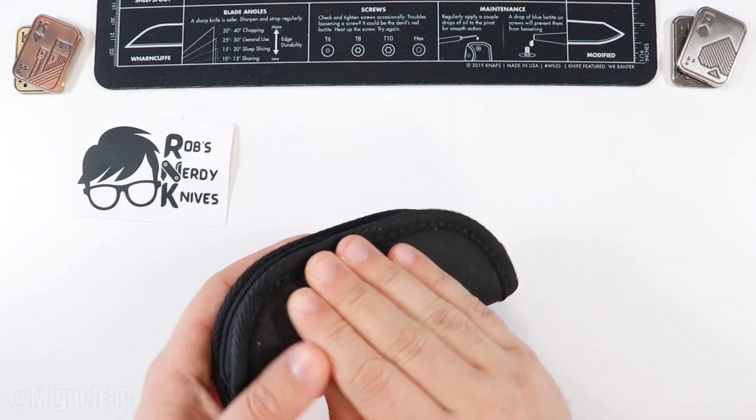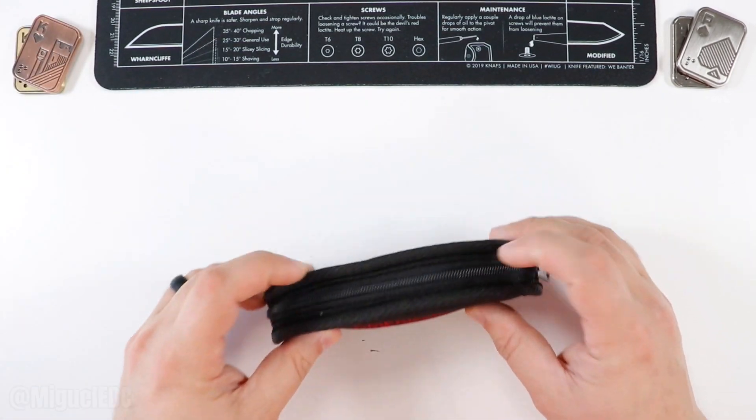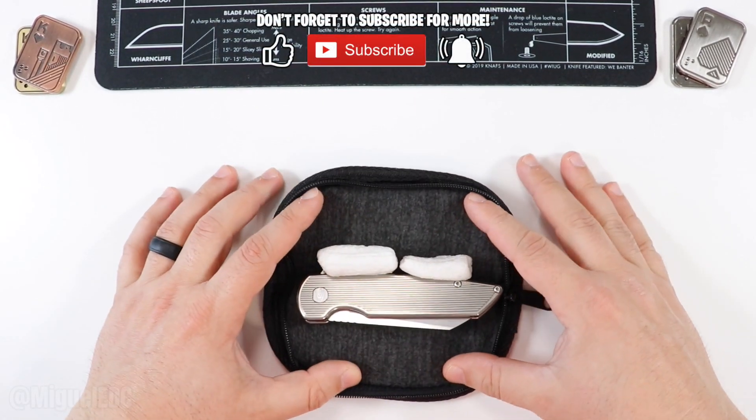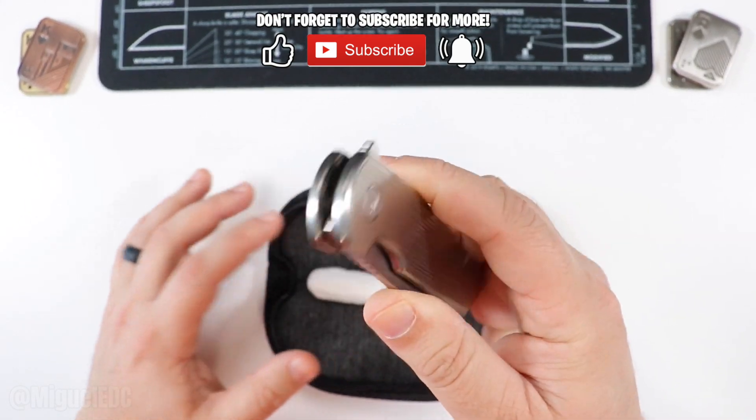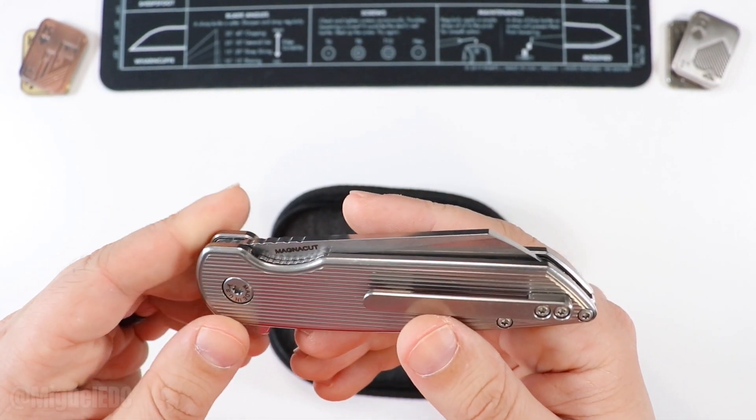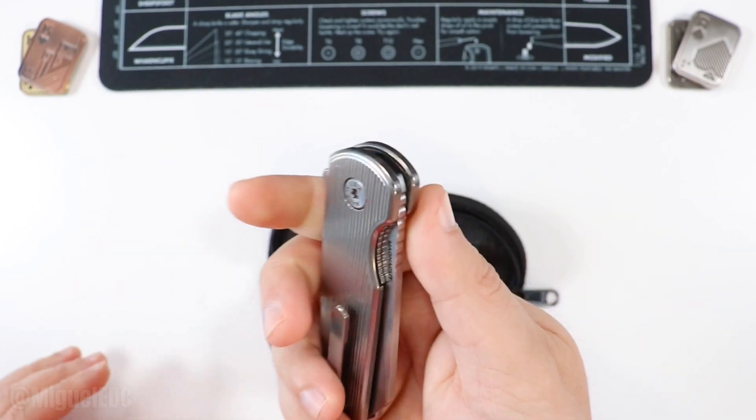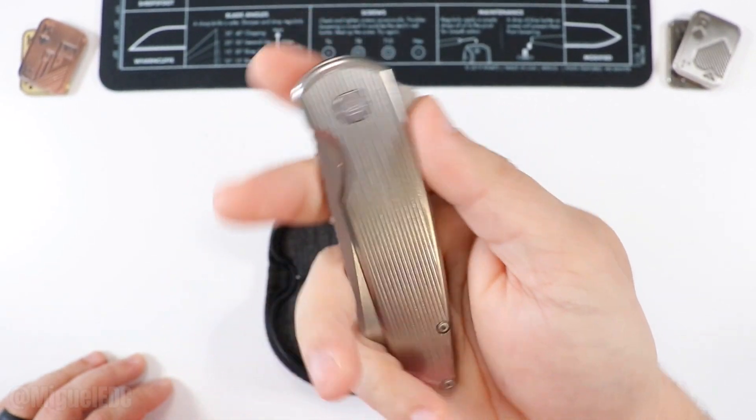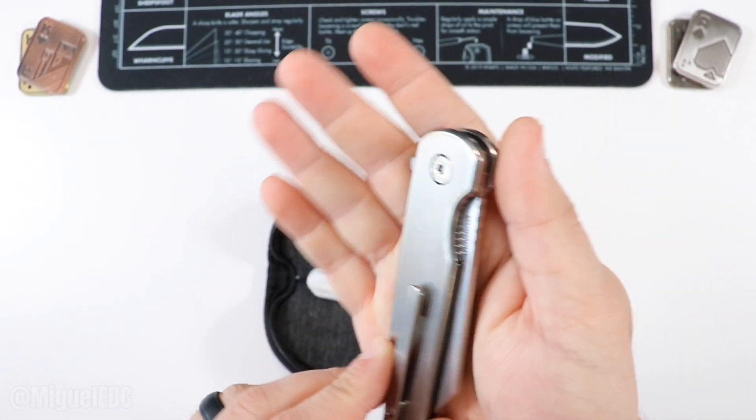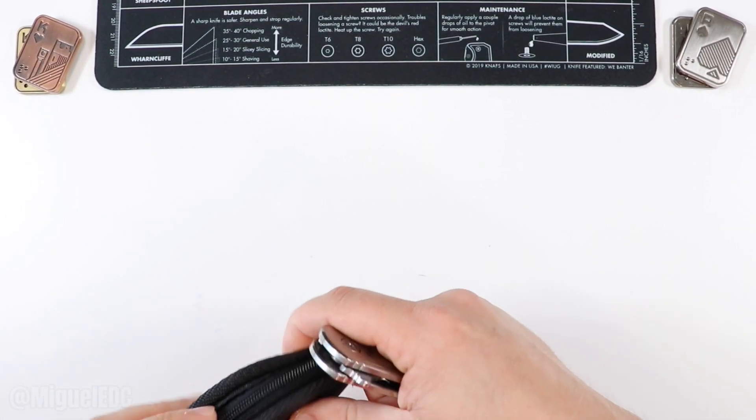We already looked at the Model 1, so I wonder what model this one is. Let's make a little bit of room here so the camera can focus real nice. I'm going to go ahead and open the zipper pouch here, and man, oh man, check this thing out. Holy smokes, I was looking forward to this. I really was looking forward to this. This right here, ladies and gentlemen, is the American Blade Works Model 2, and this thing is in full titanium.